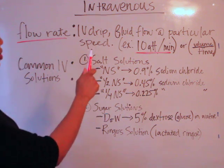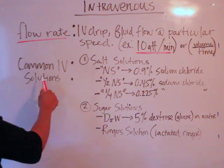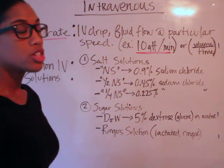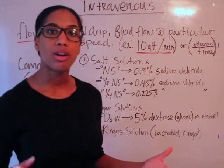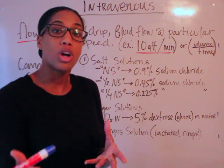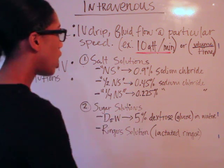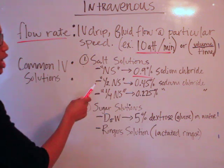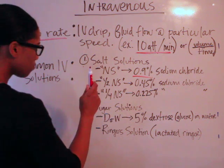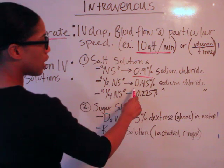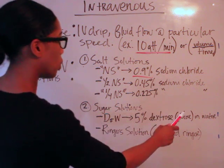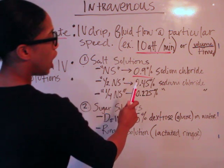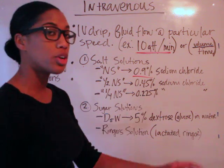With intravenous solutions, let's talk about the most common ones. First, you have your salt solutions. The most common is NS, which stands for normal saline — a 0.9% solution of sodium chloride. Another common one is 1/2 NS, which is 0.45% sodium chloride, and also 1/4 NS, which is 0.225% sodium chloride.